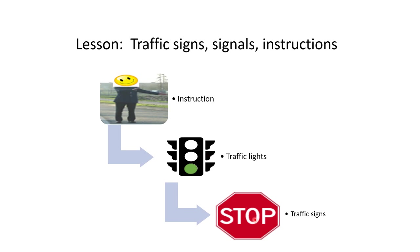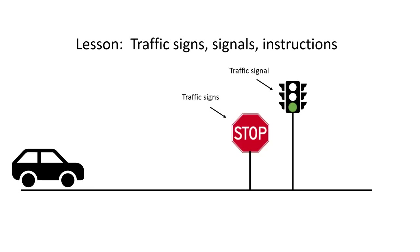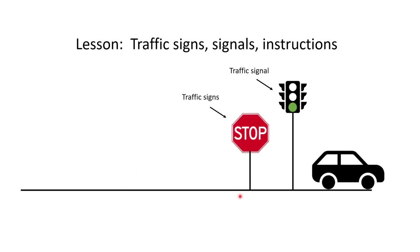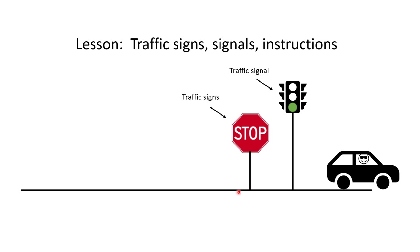So now we know: instructions come first, traffic lights and signals come second, and traffic signs come last. Next time you drive, you'll know — if there's a green light, you don't have to stop just because of a traffic sign. Thank you very much for watching, and hope to see you in the next video.